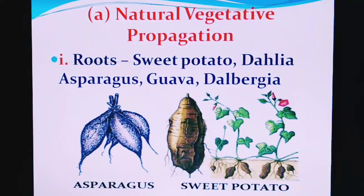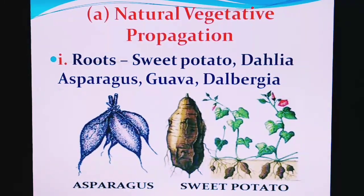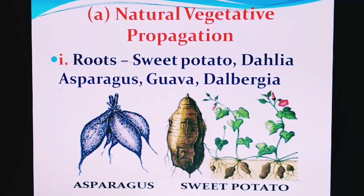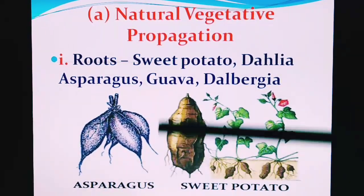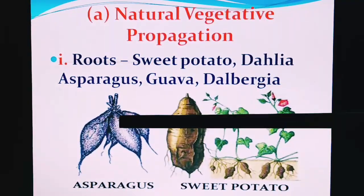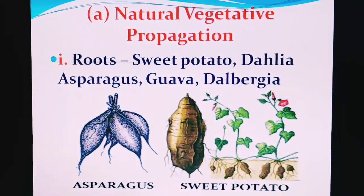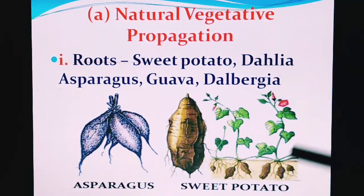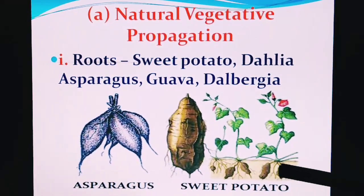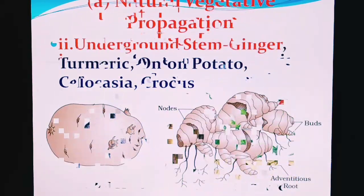The very first example involves roots. Examples of roots used in vegetative reproduction include sweet potato, dahlia, asparagus, guava, and Dalbergia. You can see pictures on the screen — this is asparagus, where the root system is used by the plant to create a new generation. This is sweet potato, where the roots are visible at the bottom of the plant. This is natural vegetative propagation by using the roots.